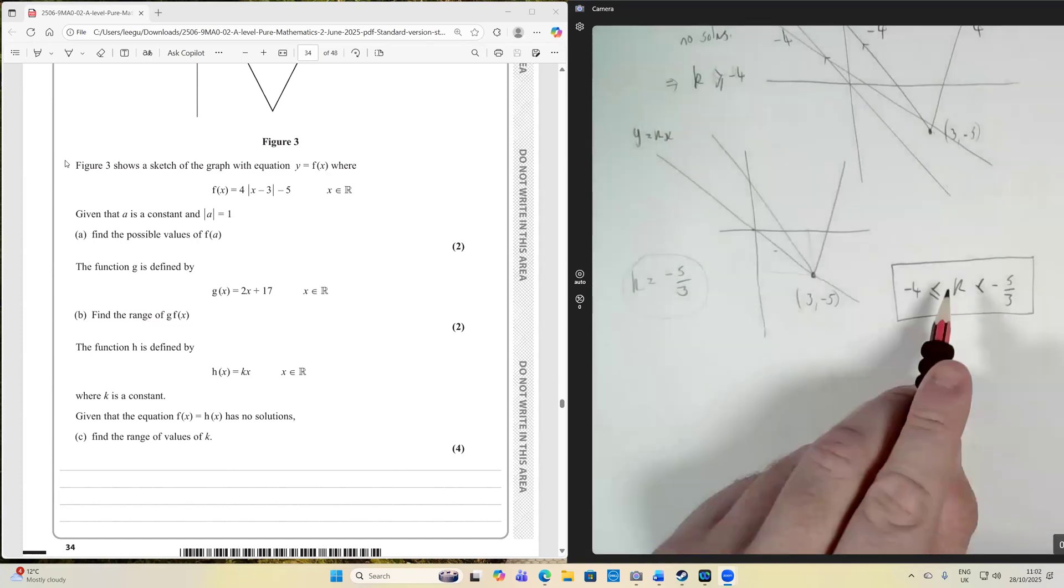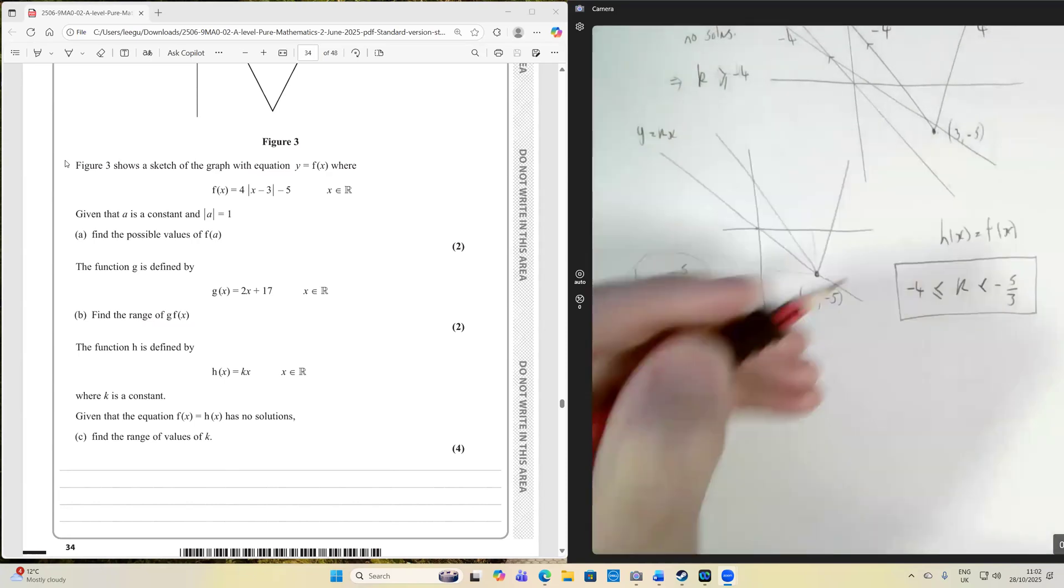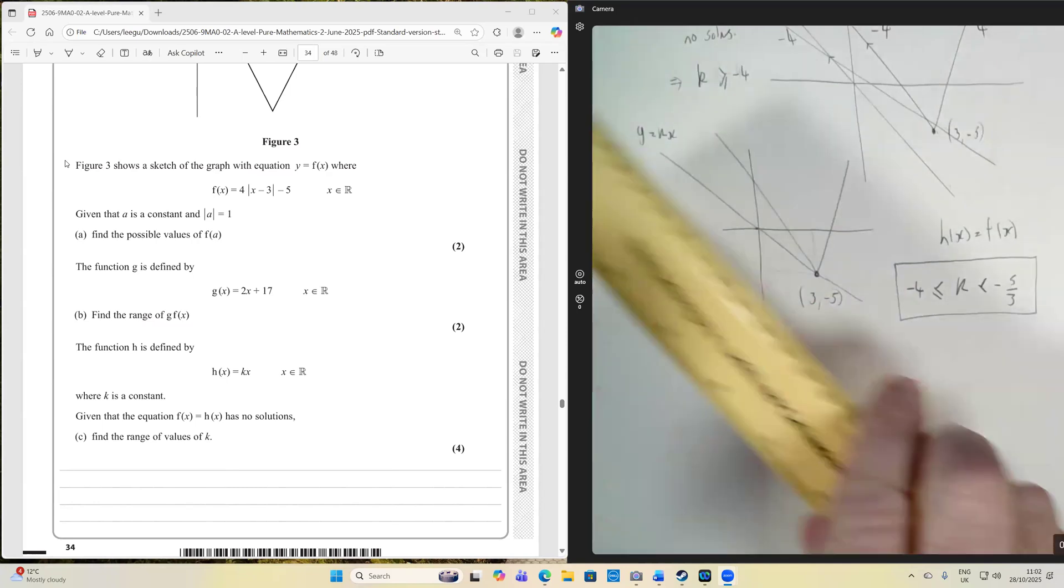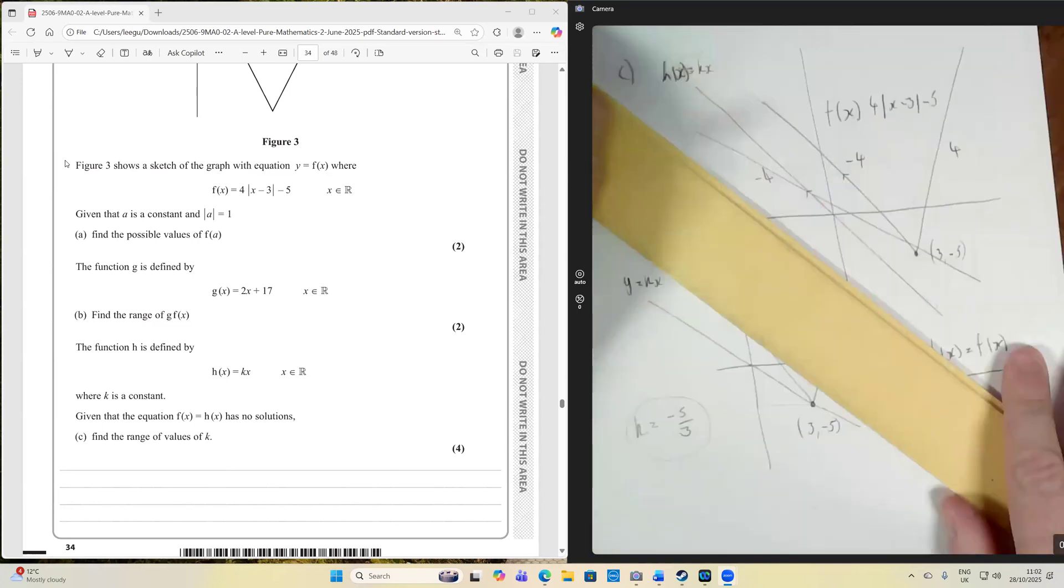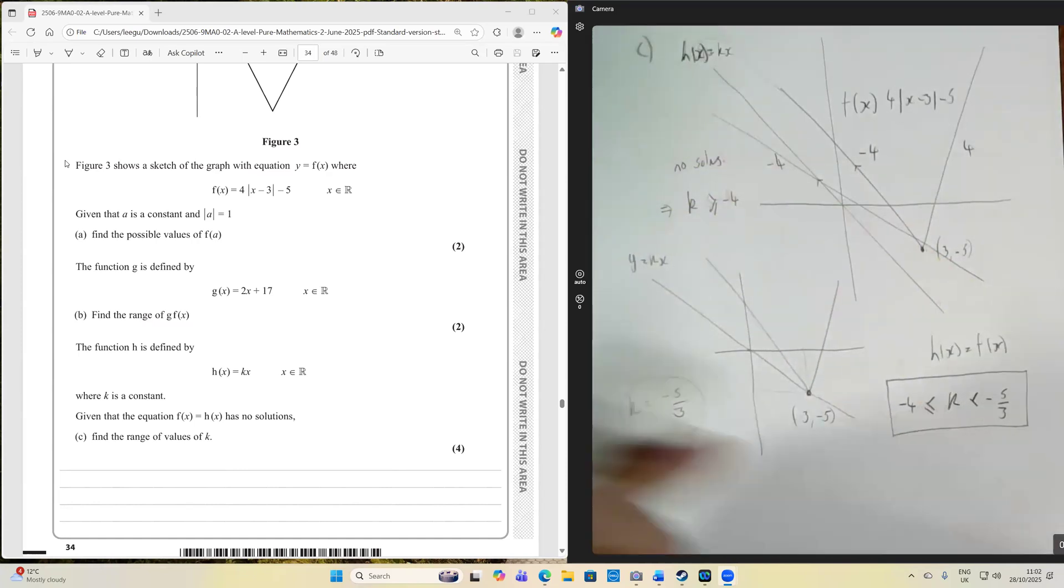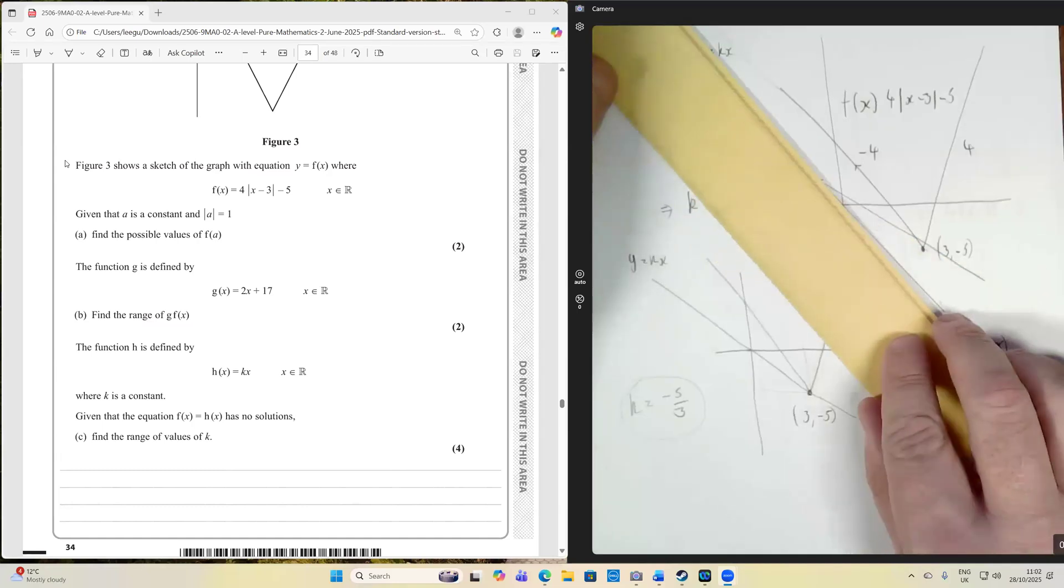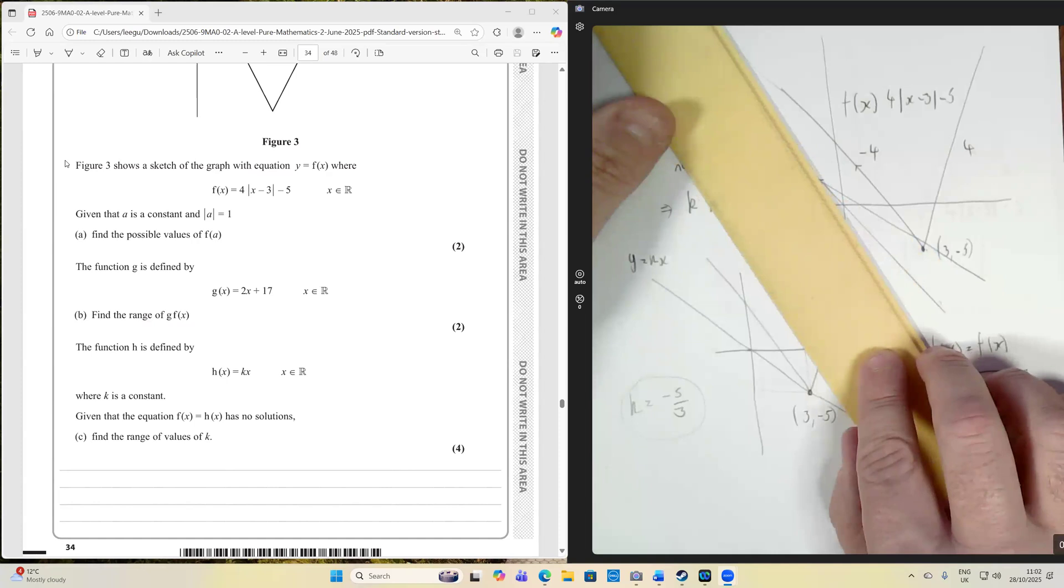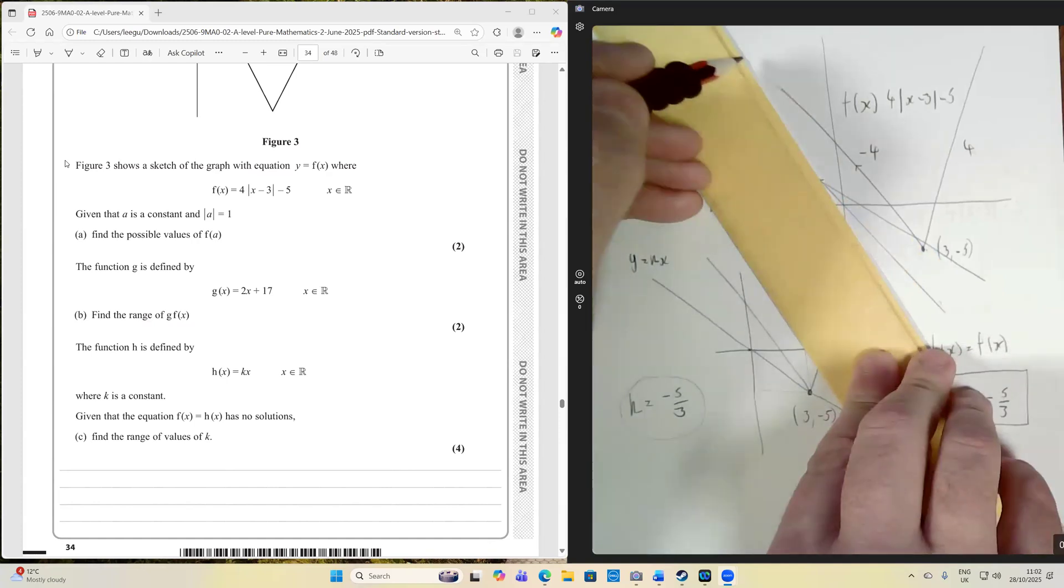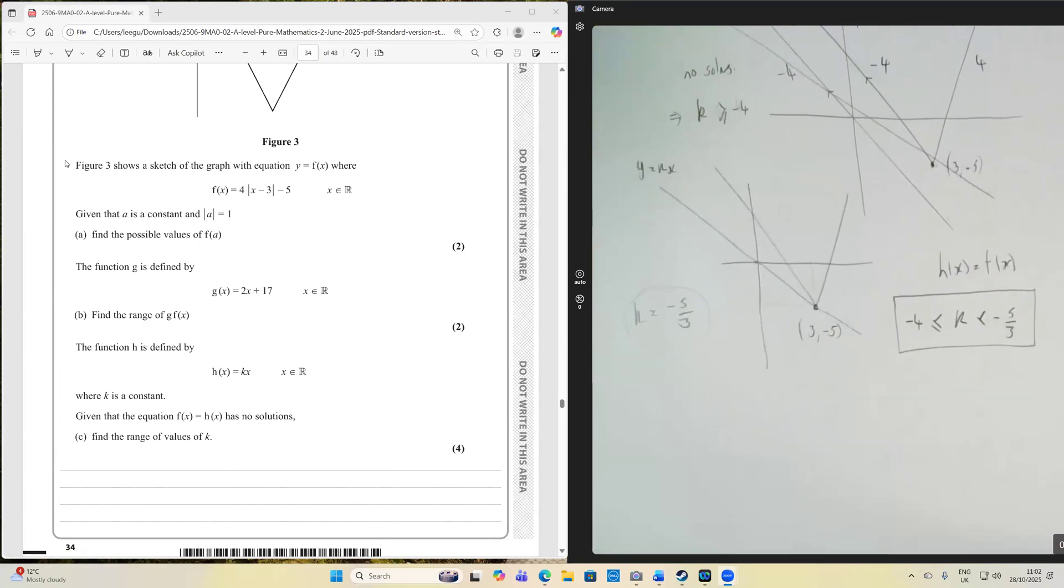So there will be no solutions to the equation h of x is equal to f of x, where k is less than minus 5 over 3. So if k is less than minus 5 over 3, that basically just means that we are somewhere here. And it has to be greater than minus 4. Because we get all the way to here, and we get to minus 4. If the gradient gets to be less than minus 4, then we'll look like that, and we'll have a solution somewhere up here. So that's our answer. That's our range of values for which there are no solutions to that equation.